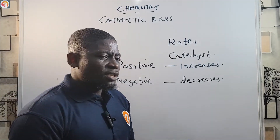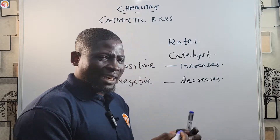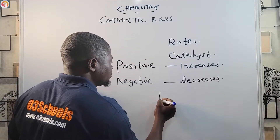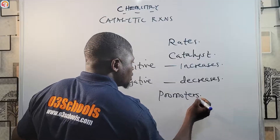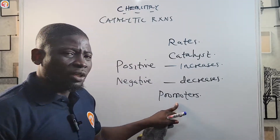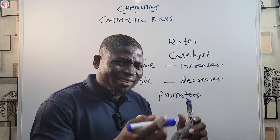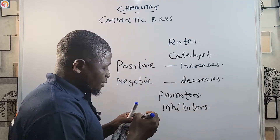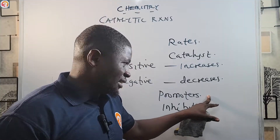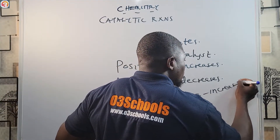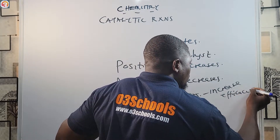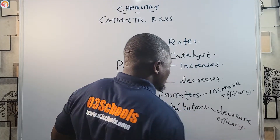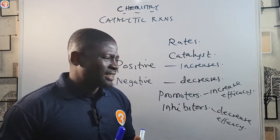There are some substances that improve or add to the efficacy of catalysts — substances that increase their strength and performance. They are called promoters. Those that decrease the efficacy of catalysts are called inhibitors.